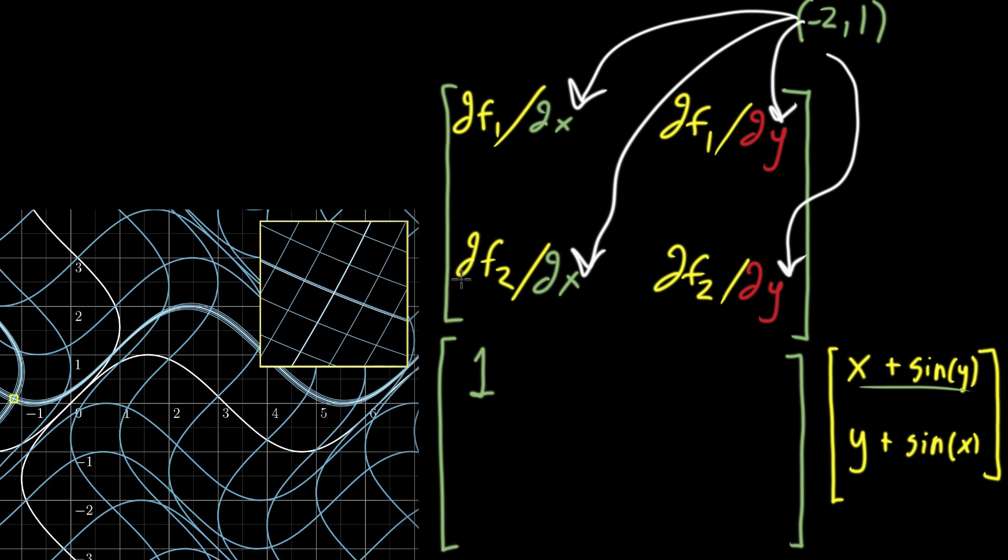And then below that, we take the partial derivative of the second component with respect to x down here. And that guy, the y, well that looks like a constant, so nothing happens. And the derivative of sine of x becomes cosine of x.